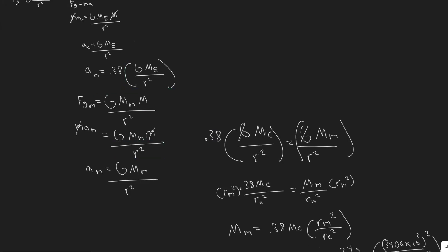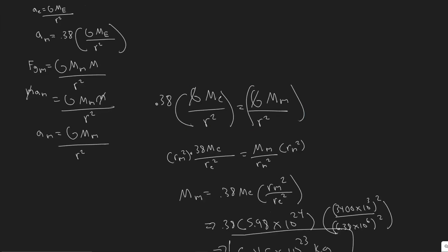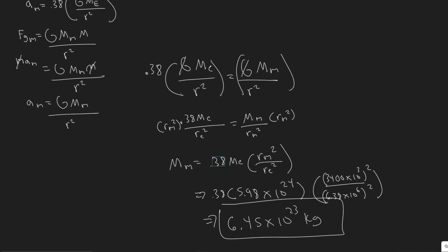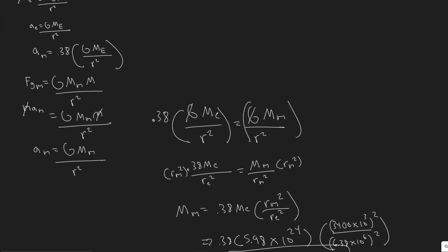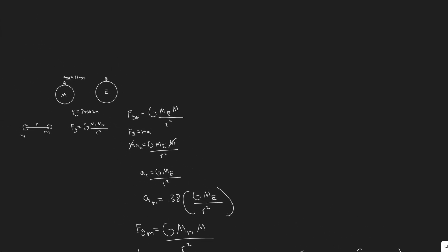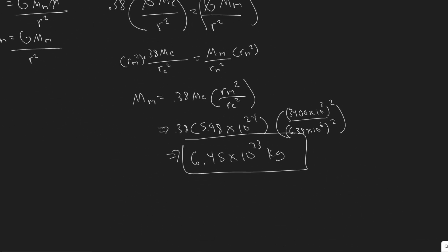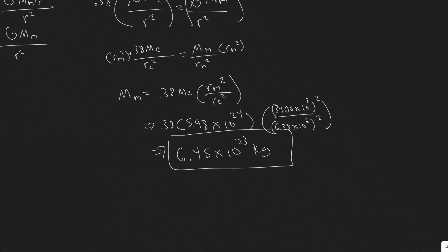Just keep in mind how we did this — pretty simple. You need to know the gravitational force formula, set the two expressions equal to each other, and notice everything cancels so we can solve for the mass of Mars. So 6.45 times 10 to the 23 kilograms is your answer. Hopefully you found this video useful.